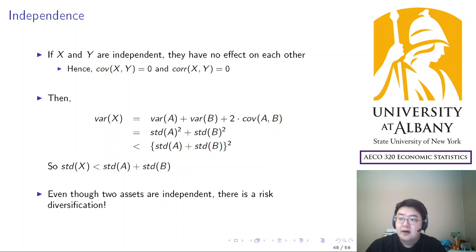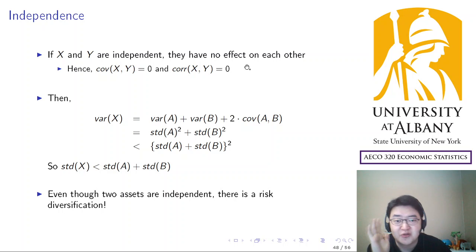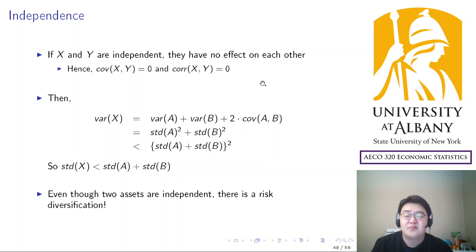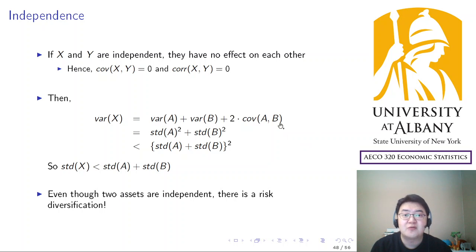By the way, this is general theory — I'm not teaching you how to invest, so don't take investment advice from me. What you need to understand is how covariance and correlation play a role in calculating the sum of two random variables. I'm going to consider a more realistic example with real data in the next video. See you then.